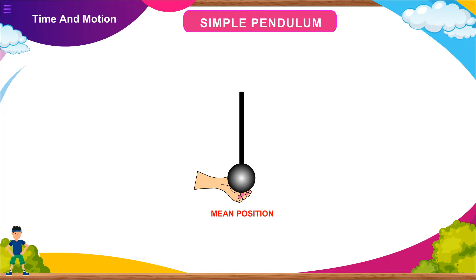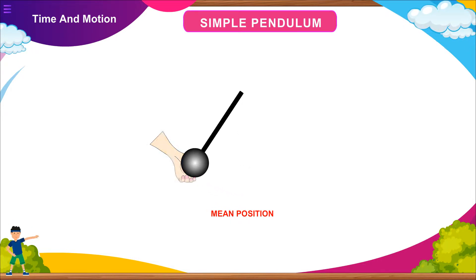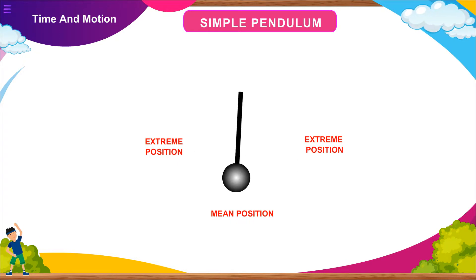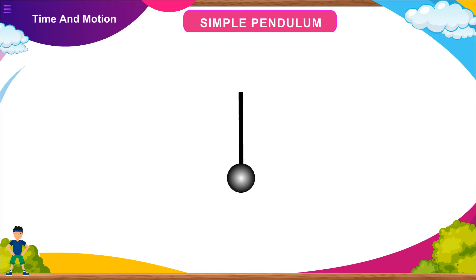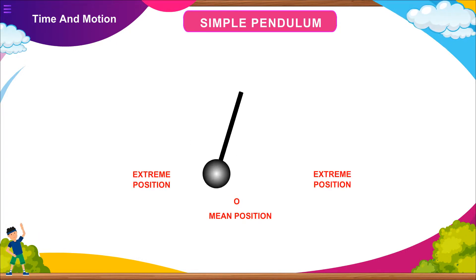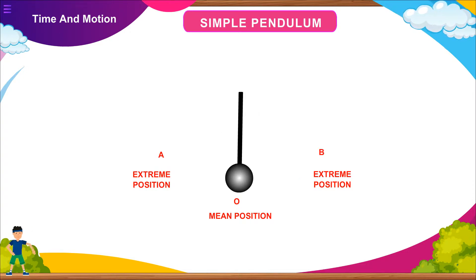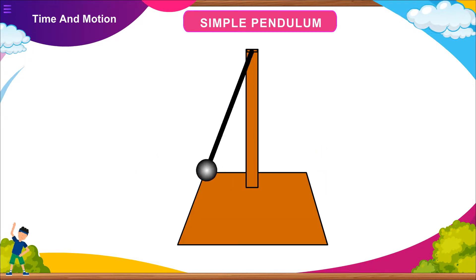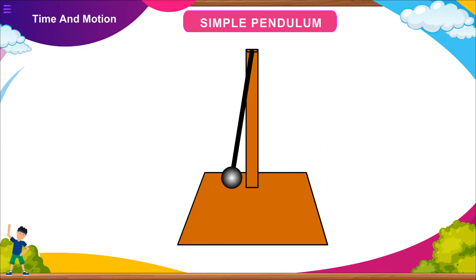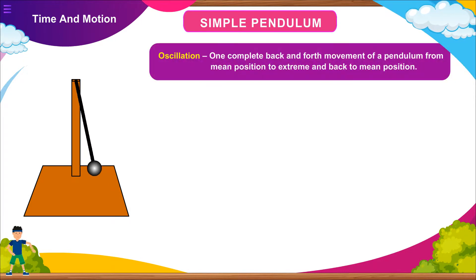When the bob of the pendulum is released after taking it slightly to one side, it begins to move to and fro. This movement of bob from its mean position to extreme position is an example of periodic or oscillatory motion. The pendulum is said to have completed one oscillation when its bob starting from its mean position O moved to A to B and back to O. The pendulum also completes one oscillation when its bob moves from one extreme position A to the other extreme position B and comes back to A. The time taken by pendulum to complete one oscillation is called the time period.